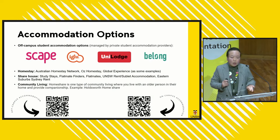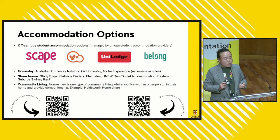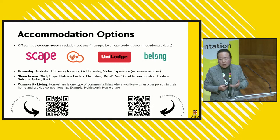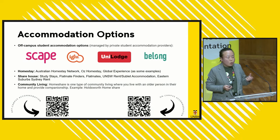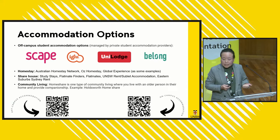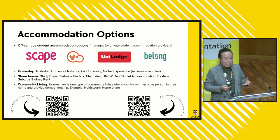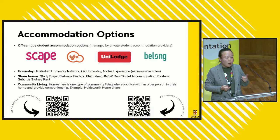Regarding accommodation: as international students, living in stable, affordable and reasonable quality accommodation is important to your welfare and your studies. There are quite a lot of options. The first is on-campus accommodation, and off-campus we have purpose-built student accommodation like Scape, Igloo and UniLodge. We also have homestay and private rental — you can see a lot of resources on the UNSW Student Day website. There is also community living. On this slide there are two QR codes: the one on the right leads to off-campus accommodation information, and the one on the left leads to on-campus accommodation information.